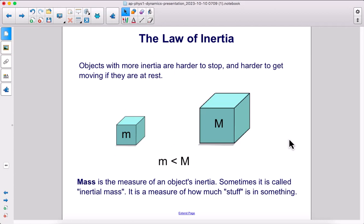Mass is the measure of an object's inertia. Sometimes it's called inertial mass. It is a measure of how much stuff is in something. So here we have two cubes made of the same material. This one's just larger than this one. Therefore, this one has more mass and more inertia.